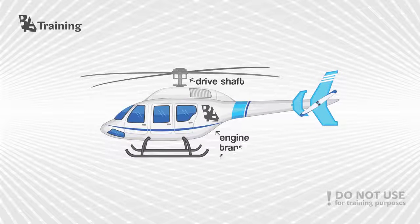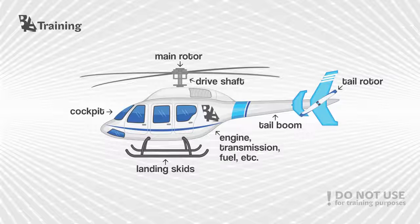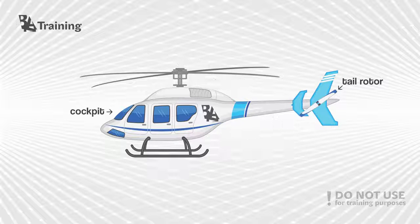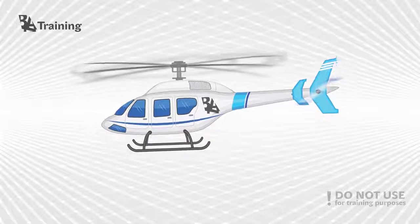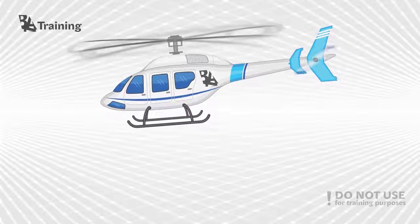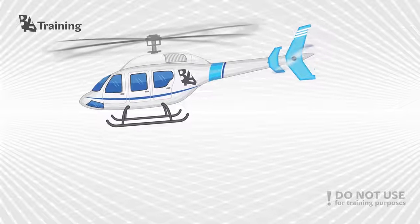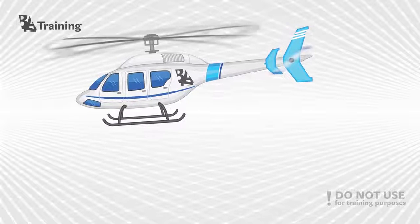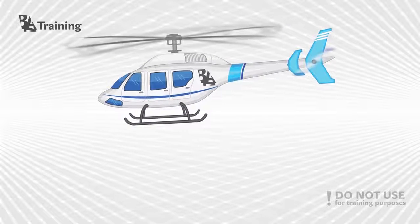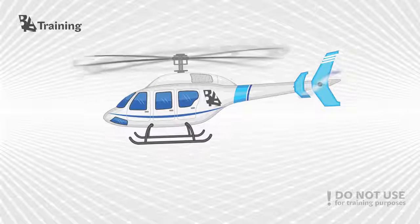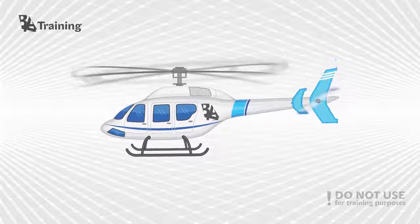A helicopter is a type of rotorcraft in which lift and thrust are supplied by rotors. This allows the helicopter to take off and land vertically, to hover, to fly forward, backward and laterally. These attributes allow helicopters to be used in congested or isolated areas where fixed-wing aircraft and many forms of vertical takeoff and landing aircraft cannot perform.